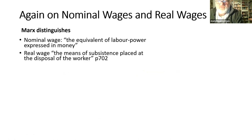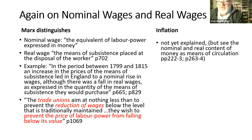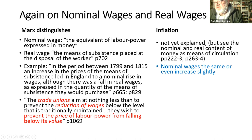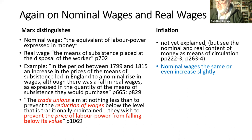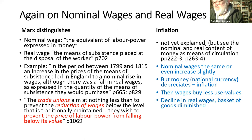Marx distinguishes between nominal wages — the money in the pay packet — and real wages — the means of subsistence that can be bought with it. He gives the example of England in the early 19th century where inflation eroded real wages. He brings in trade unions here, noting their role is to fight against the reduction of wages — which is incredibly contemporary, as currently nominal wages are very slightly increasing but real wages are declining due to inflation.